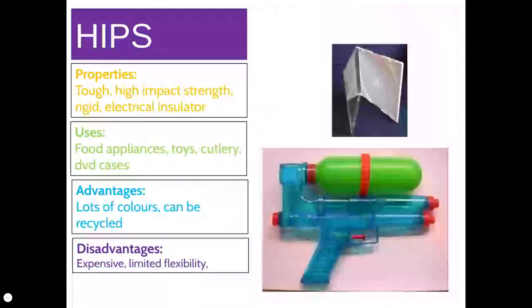High-impact polystyrene is what we use in the vacuum former. It can be used for a variety of things. Vacuum-formed products you'll see in supermarkets include yoghurt pots, fast food trays and containers, and CD cases.